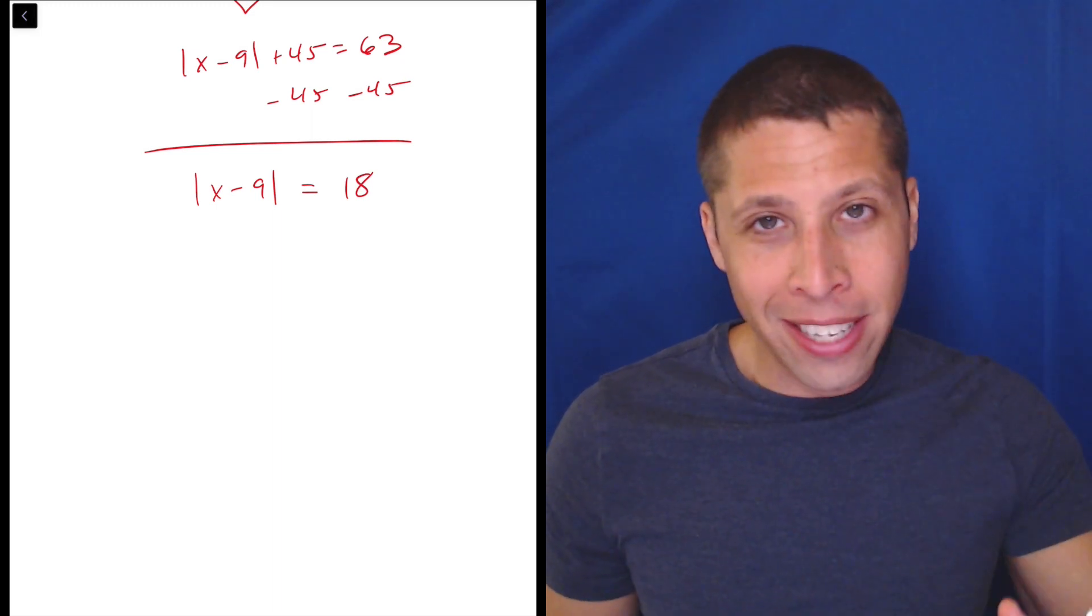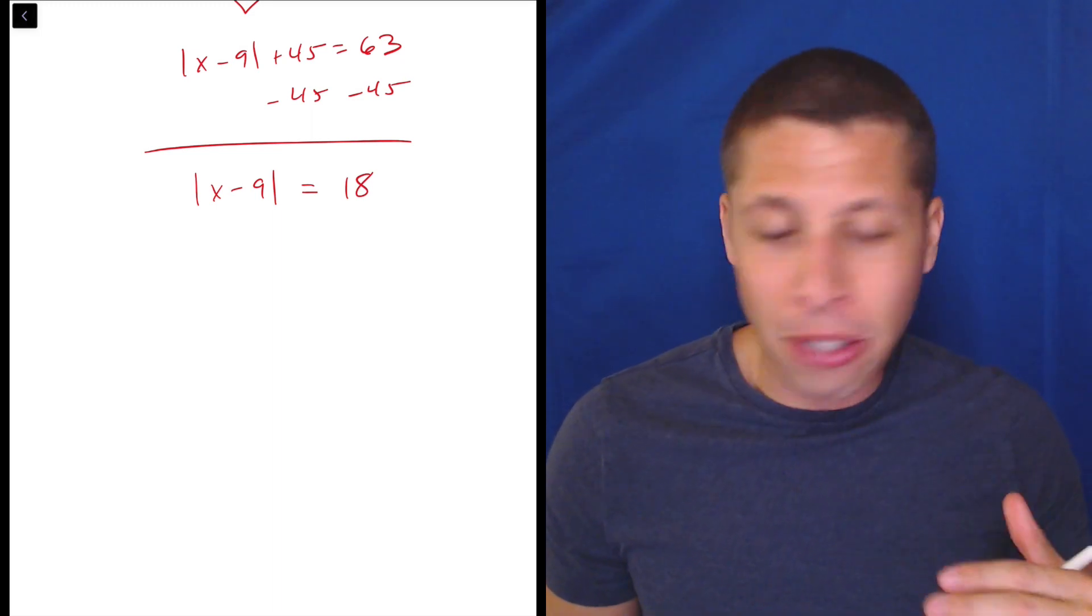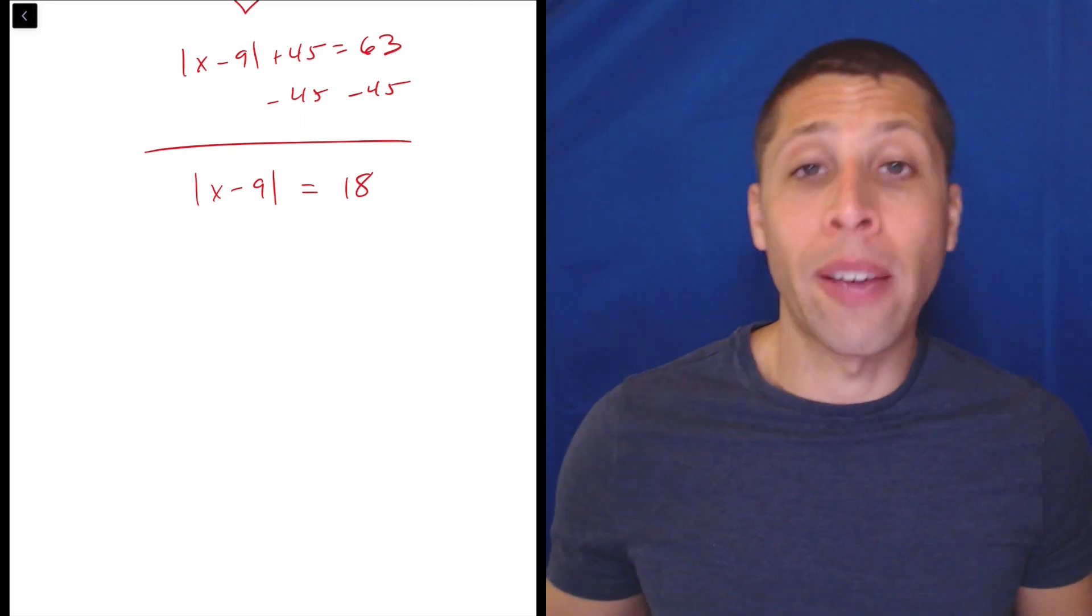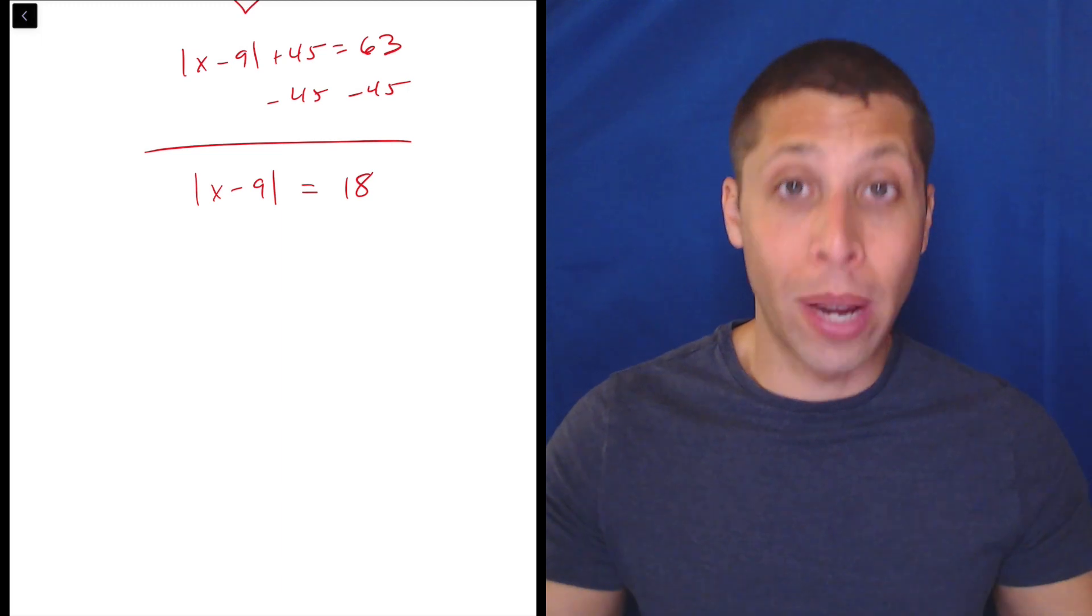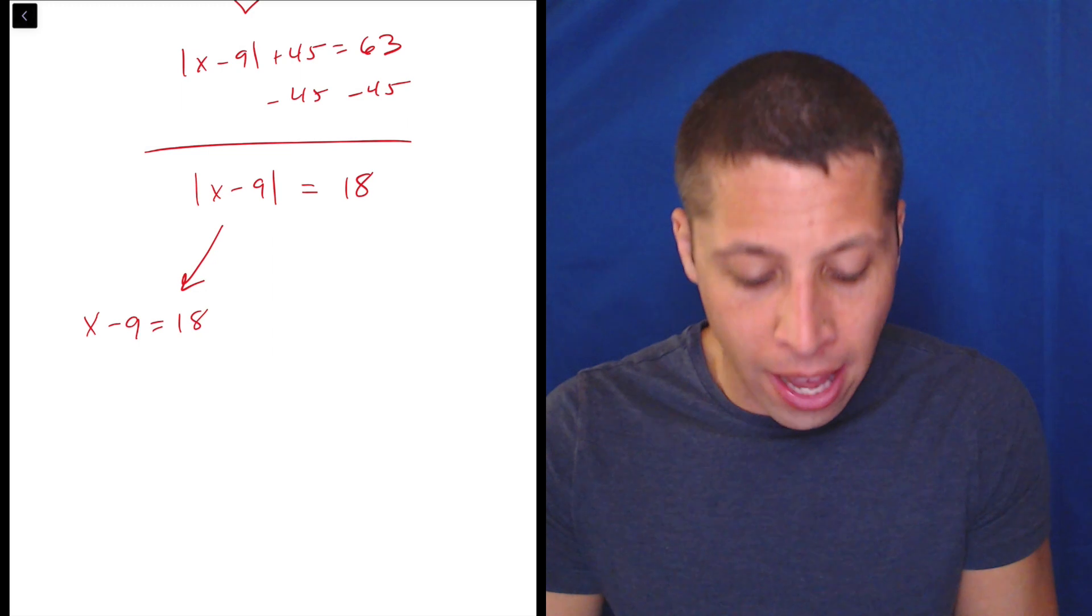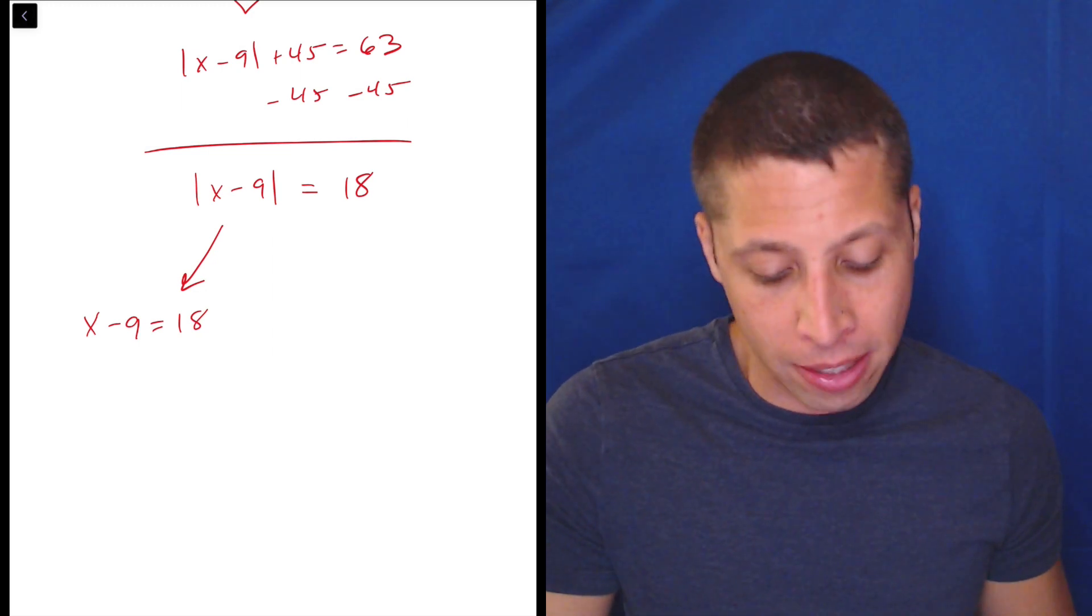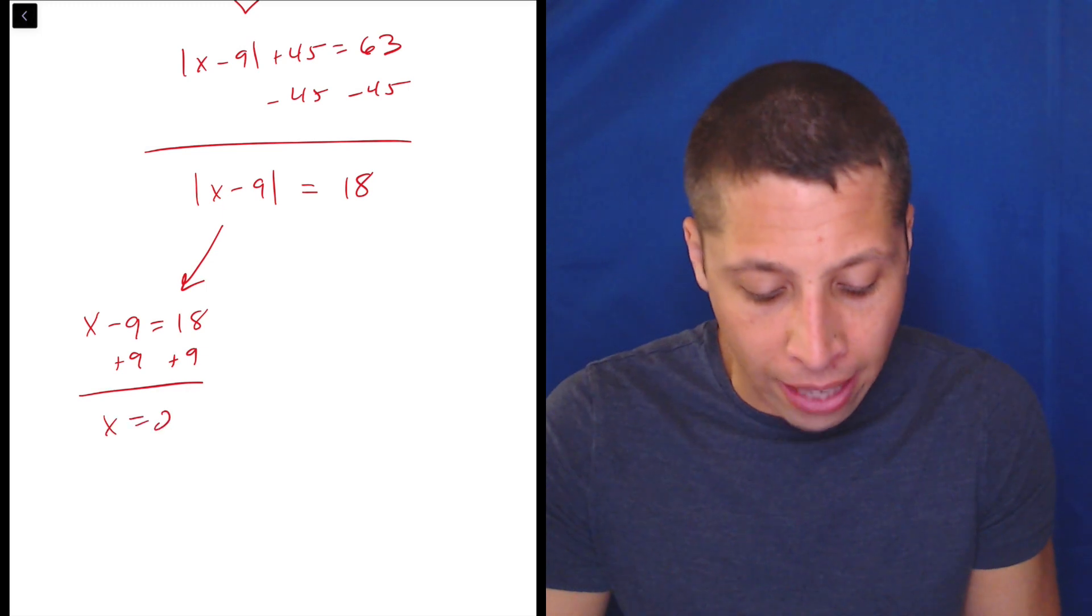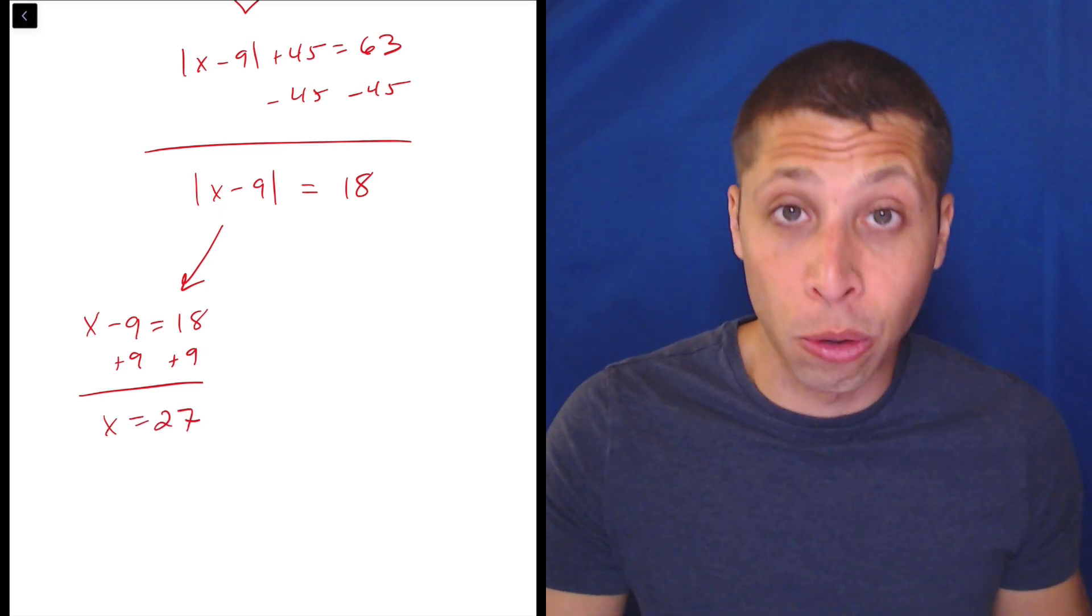Now, I know 18 ends up being our answer, and maybe there's some mathematical reason for that. I didn't quite think that through. But technically, what we're supposed to do if we have absolute values is to create two equations. So one of them is very simple. Just drop the absolute value bars, and that's that. Solve. So x minus 9 is equal to 18. So add the 9 to both sides, and x is 27. And that's one of the solutions we found.